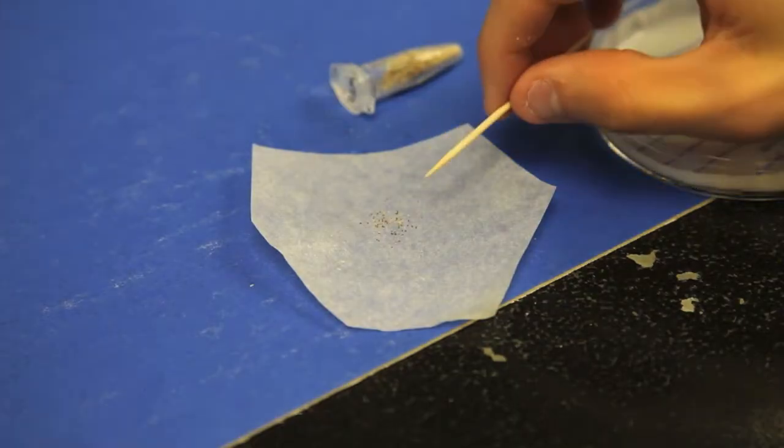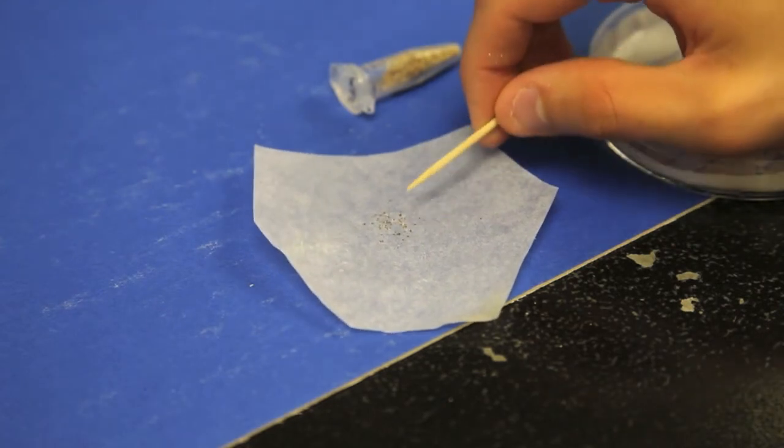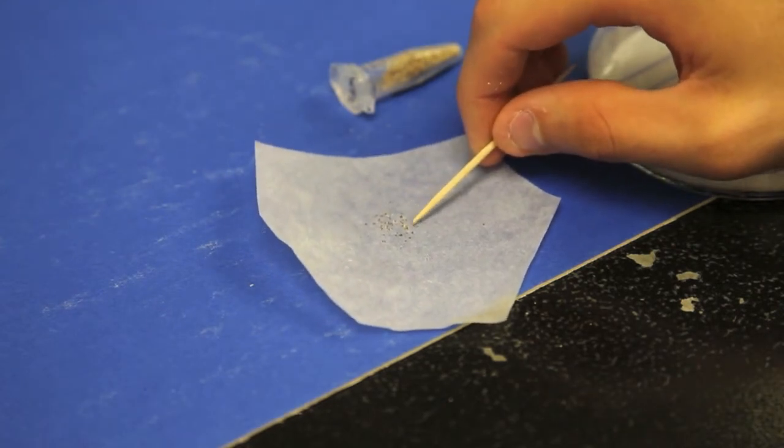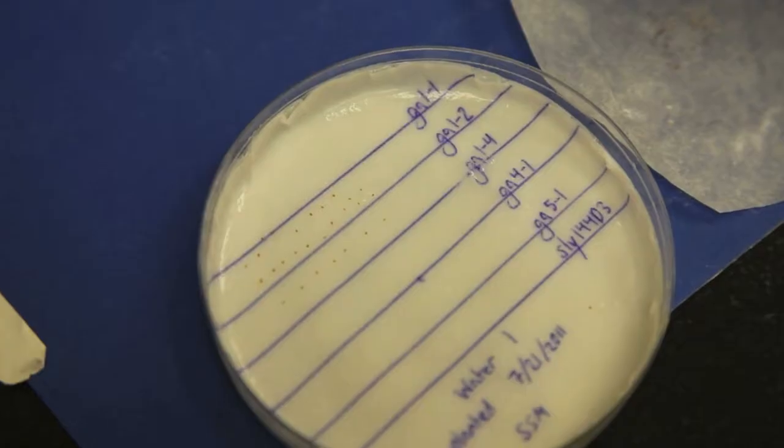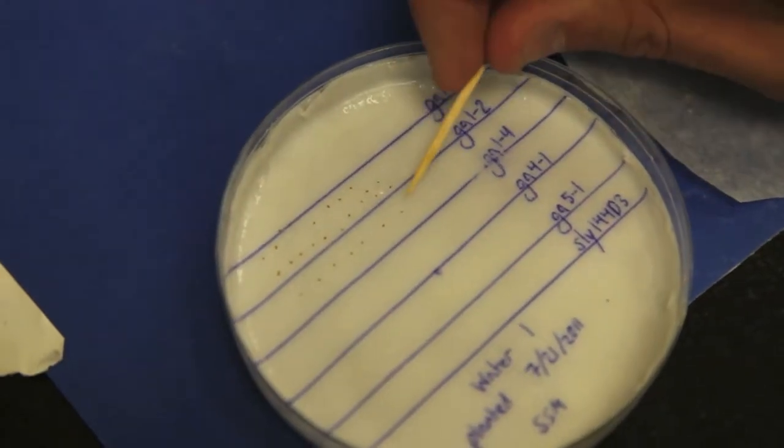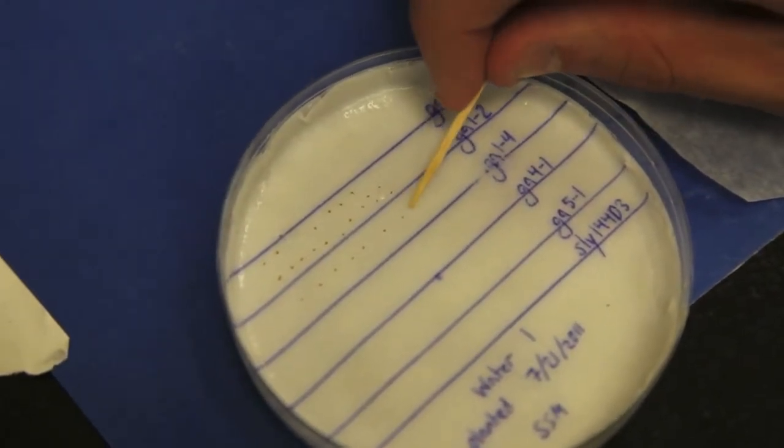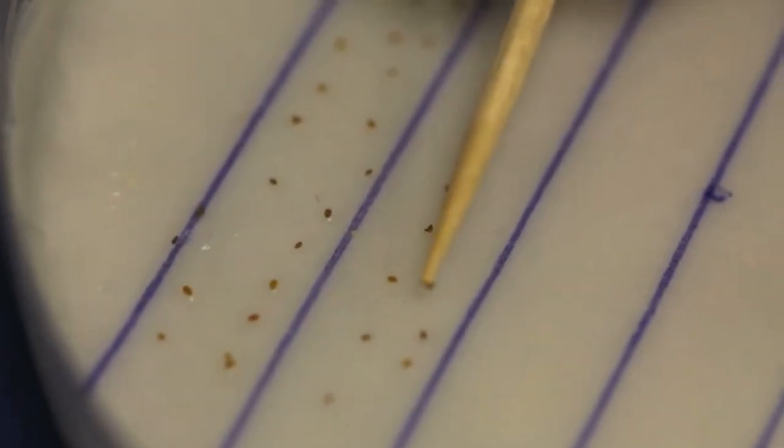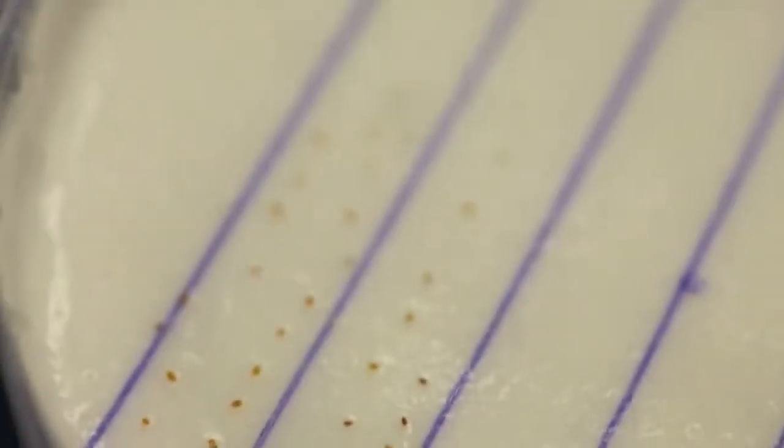With its tip wet, you can use the toothpick to move individual seeds from the wax paper to your petri dishes. Simply touch the tip to an individual seed and then place it in the correct spot over your petri dish. Be careful to place the seeds within each section so that you can later identify them.